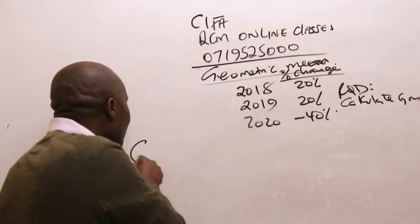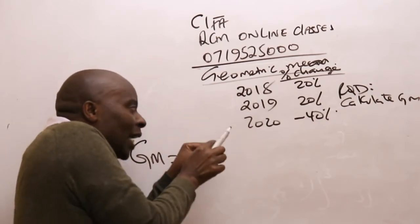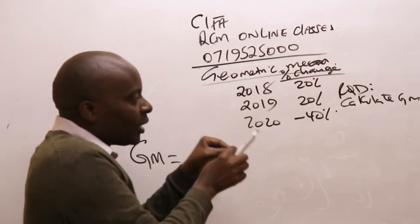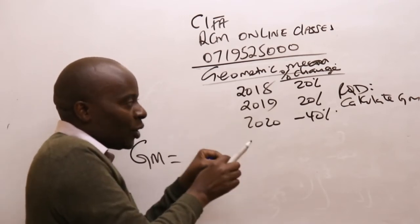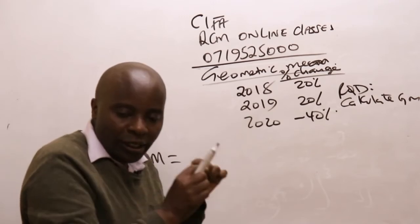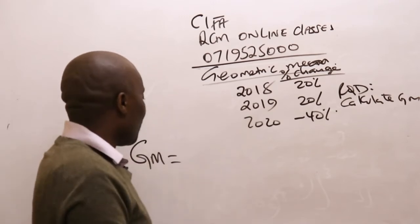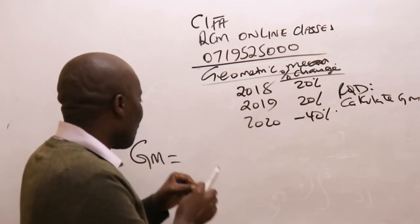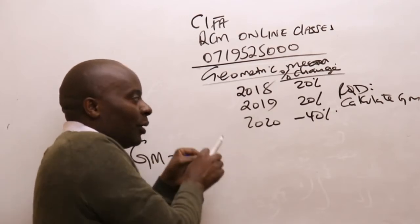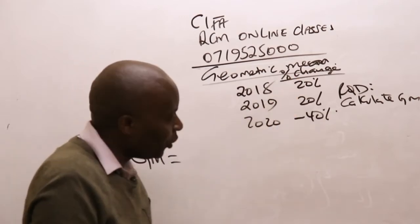Even if they just ask you to compute the mean, the very best type of measure of central tendency suited for these situations is called the geometric mean — the most suitable because we have percentages, proportions, and rates of change.